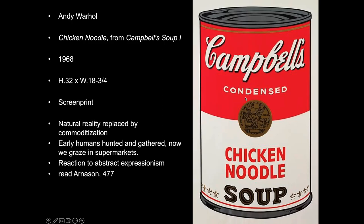Andy Warhol's Campbell's Soup Can, which he tried to create exactly as it appears on the can, illustrates this idea. He started out as an advertising painter, so he could paint very precisely, and this is a print. His point: when you get a Campbell's chicken noodle soup, whether you're in New York or California, it's the exact same — buy it 20, 30, or 40 years ago and it would be the same today. Natural reality, which once made things different day to day, is replaced by a commoditization that makes things very similar.